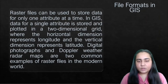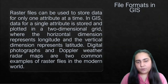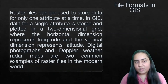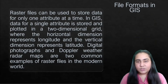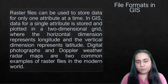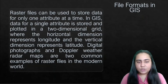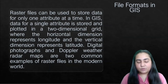Digital photographs and Doppler weather radar maps are two common examples of raster files in the modern world. Digital photographs still use raster format because of pixels, and weather radar maps — maps that show which areas are heated and which are cooler — also use this raster format.